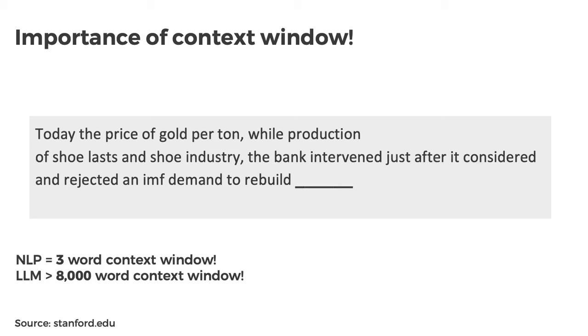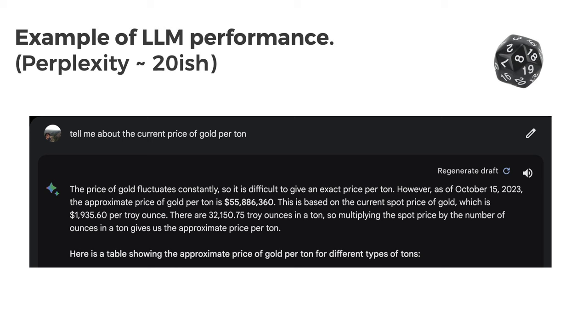Where LLMs get exciting is we go from a three-word to an 8,000-plus word context window — astronomically better — and that's where all this performance is coming from. For the same prompt — 'Tell me about the current price of gold' — Bard comes back with a response that is probably better than I could come up with, including a table with charts and information to help make decisions. This displays the great potential of integrating this into products, and it's why companies are invested in trying to integrate it.